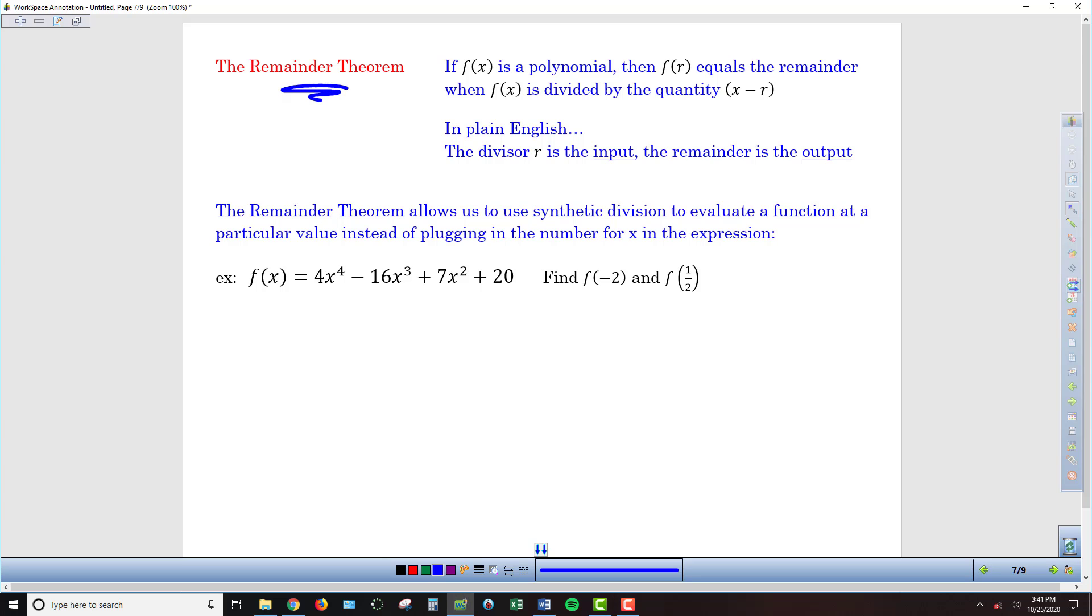Via the remainder theorem, we have this statement here that says that if you have a polynomial f(x), then if you're evaluating f(r), f(r) equals the remainder when f(x) is divided by x minus r.